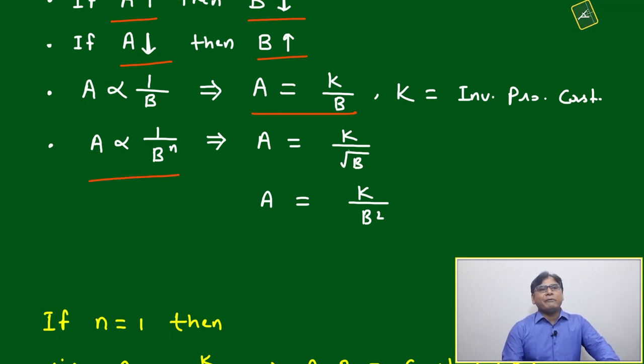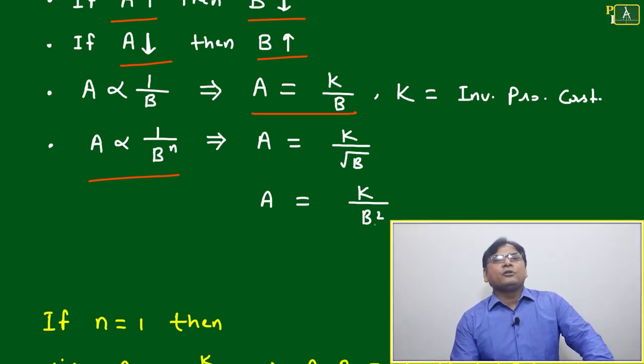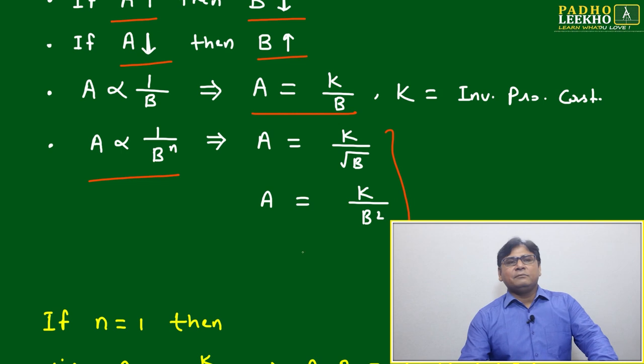If A is inversely proportional to B to power n, then so many possibilities will be there: A equal to k by B, k by root B, square root of B, or k by B square. These are the possibilities we have seen already.